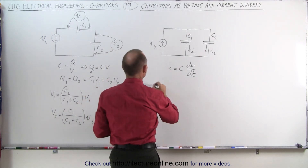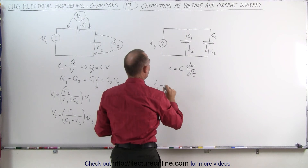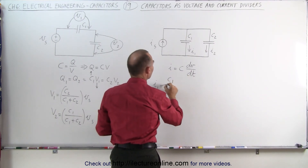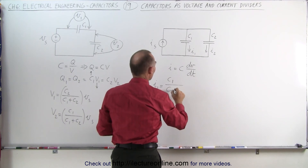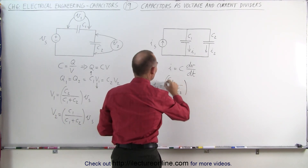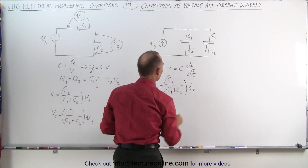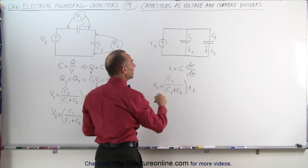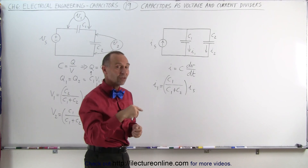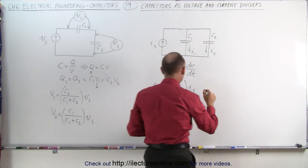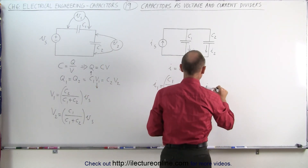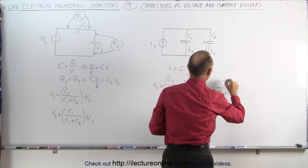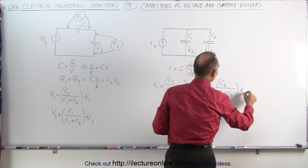Therefore, I1, the current in the first branch, equals C1 divided by (C1 plus C2) times I_S. In this case, the current is proportional to the capacitance — rather than the capacitance of the other capacitor. And I2 equals C2 divided by (C1 plus C2) times I_S.